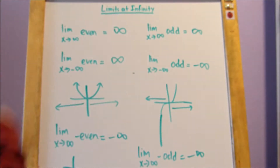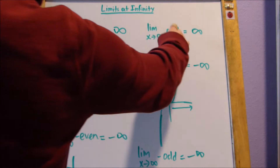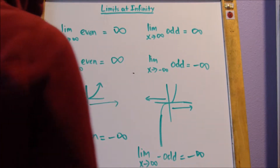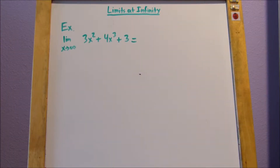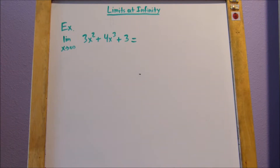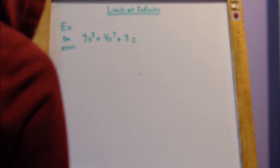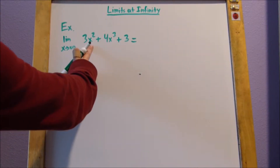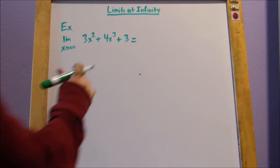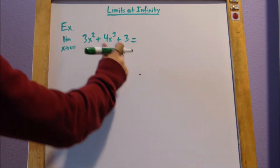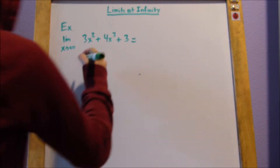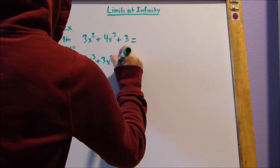That's an easy way to figure out the limits at infinity of even or odd functions. Next, let's look at some example problems. Our first example is the limit as x approaches infinity of 3x squared plus 4x cubed plus 3. The first thing I like to do is figure out if this function is even or odd. You might be tempted to say this function is even because the first exponent you see is 2, but if you move on to the second term, the highest exponent is 3.